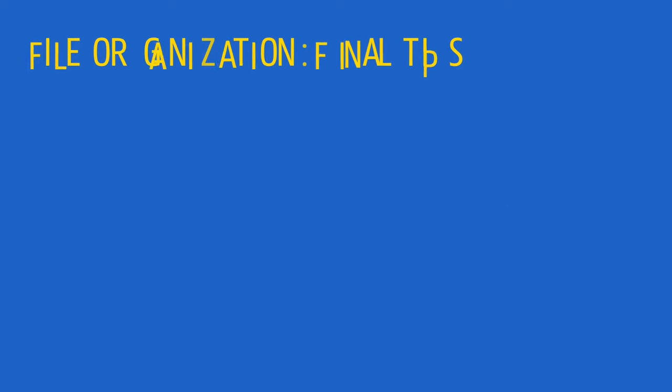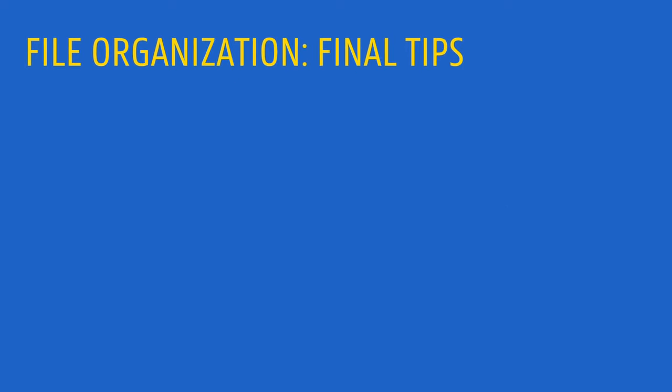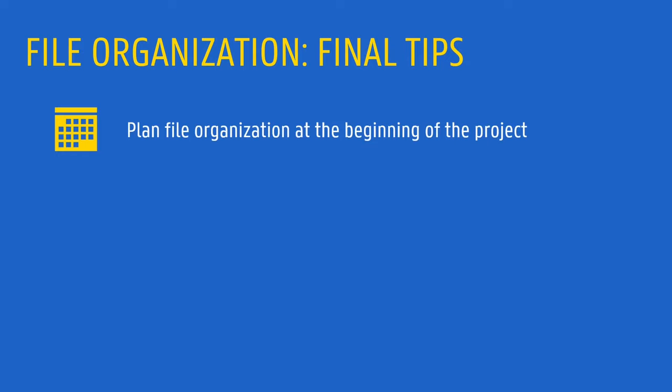Let's have a look at some final tips. It is advised to take some time at the beginning of the project to plan file organization. Develop a file naming convention, decide on your folder structure, and how you will approach version control. As you make these decisions, make sure to document them. This way, you and the people you work with can easily adopt the rules you have set up.